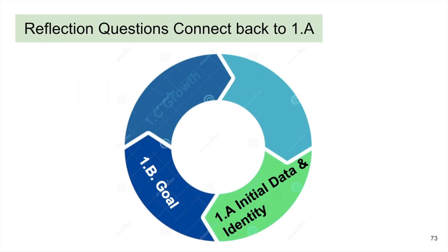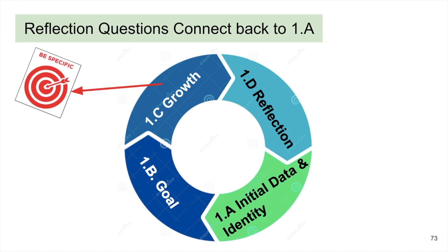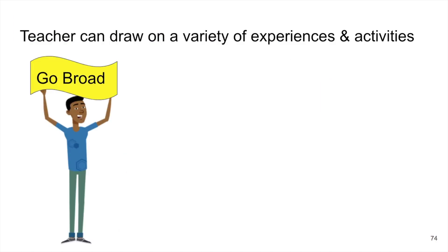These reflection questions at the end of the cycle connect back to 1A, where the teacher contemplated similar questions to establish a baseline prior to starting the goal cycle. For the reasoning statement in 1C, we ask the teacher to be specific. However, in 1D, the teacher can draw from any and all experiences that happen throughout the cycle.